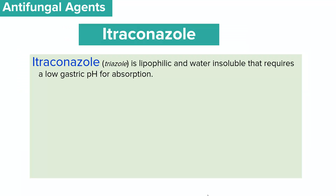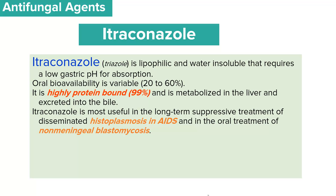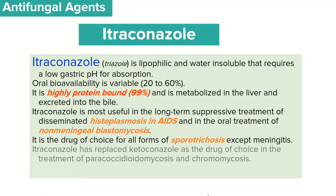Itraconazole is a triazole that is lipophilic and water insoluble; therefore, it requires a low gastric pH for its absorption. Itraconazole has variable bioavailability when administered orally of about 20 to 60%, is highly protein-bound at about 99%, and is metabolized in the liver then excreted in bile. It is most useful in the long-term suppressive treatment of disseminated histoplasmosis in HIV/AIDS patients and in oral treatment of non-meningeal blastomycosis. Itraconazole is used as the drug of choice for all forms of sporotrichosis except meningitis, and has replaced ketoconazole as the drug of choice in paracoccidioidomycosis and chromomycosis.